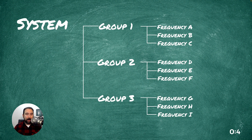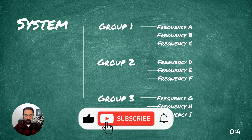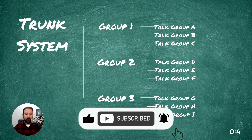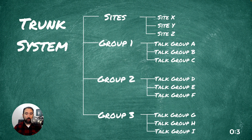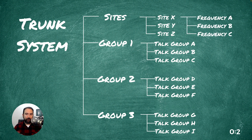Pretty simple. What happens, though, if we want to install a trunk system on our scanner? Very simple — we make one change. We first set up a trunk system, and instead of there being frequencies inside the groups, there are talk groups inside the groups. What else do we need? We need to add sites. In this example, I have three sites added, and every site needs frequencies. Site X has three frequencies.